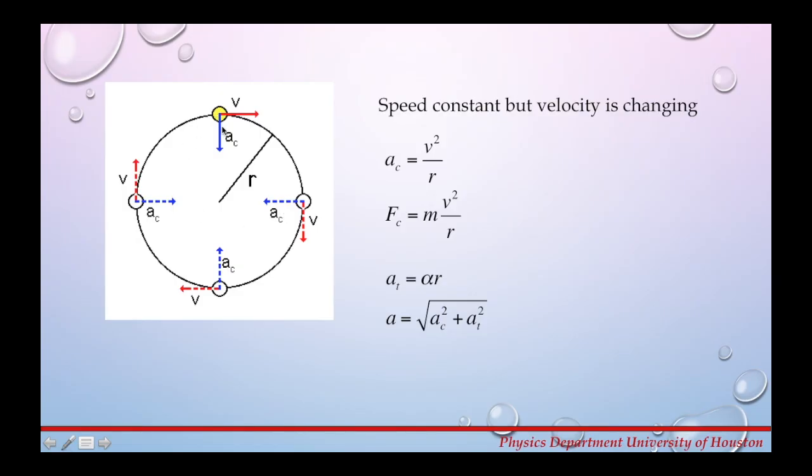Even if the object's speed is constant, the velocity is changing because the direction of motion is changing and we know that the velocity vector is always a tangent to a trajectory.